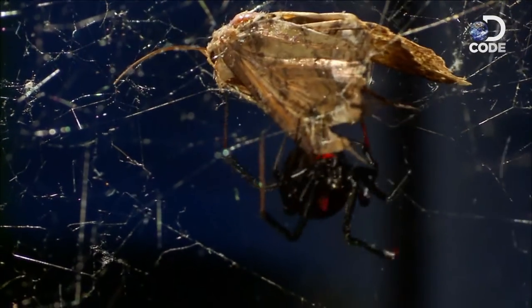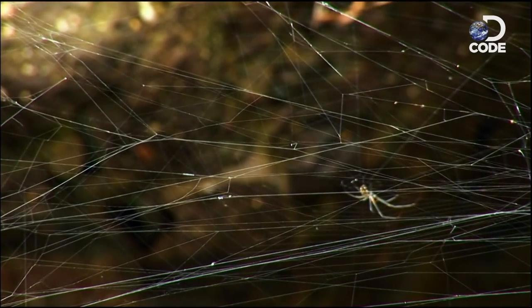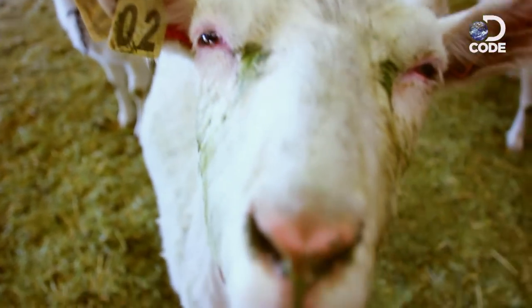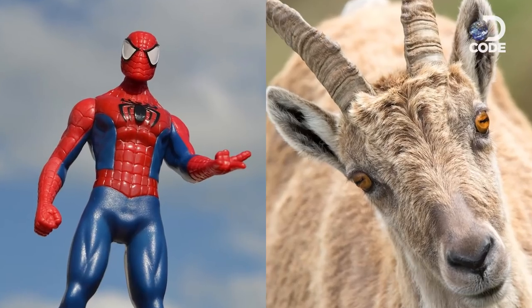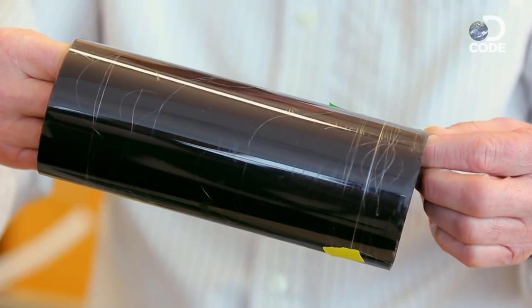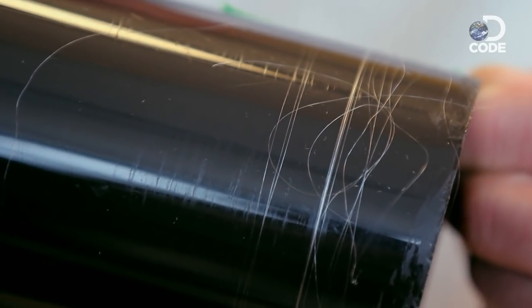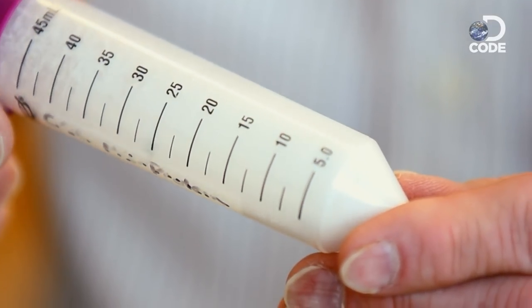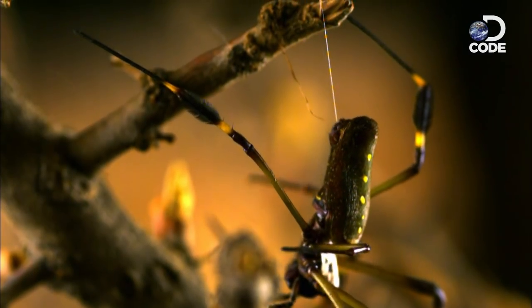Scientists have injected spider DNA into goats to create super silk three times stronger than Kevlar. And that is just the start.